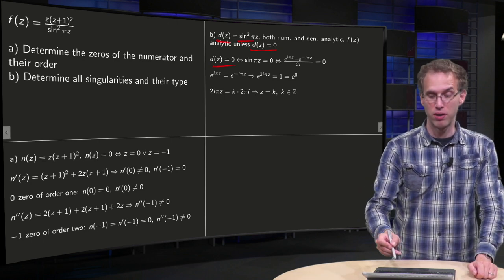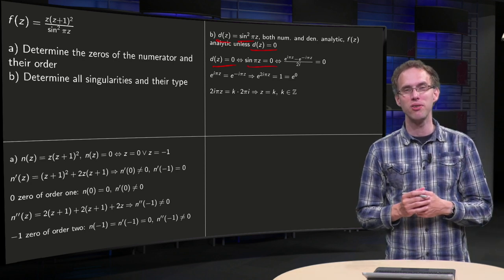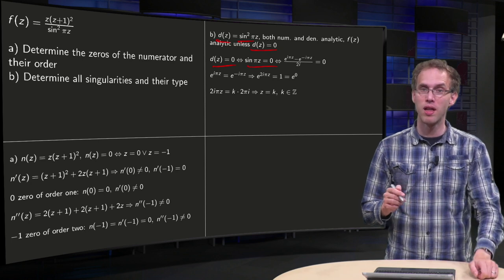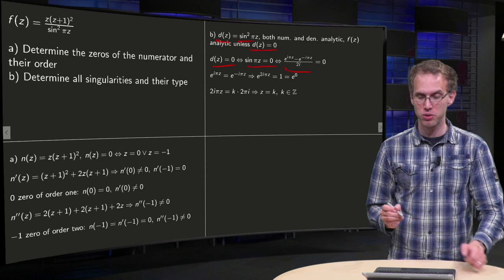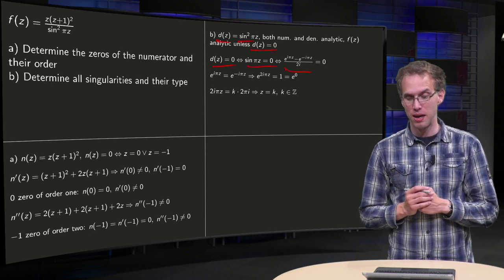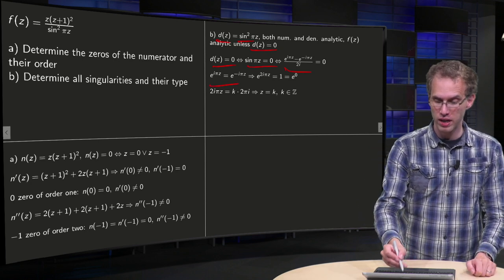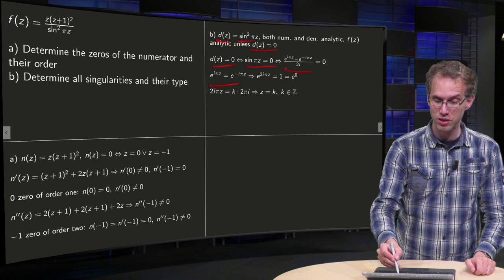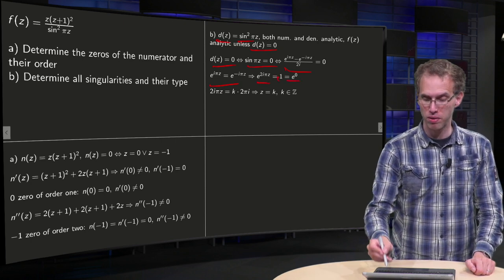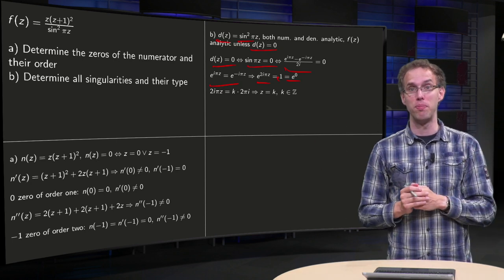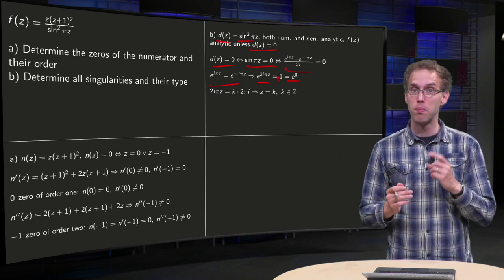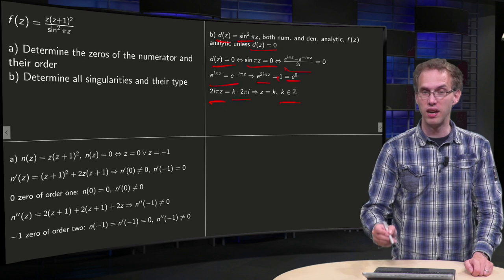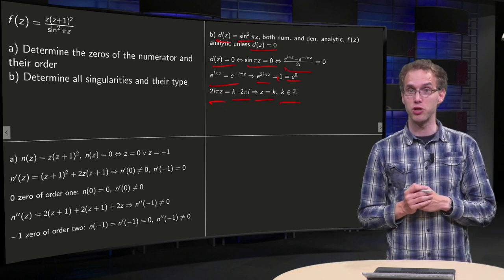d of z is zero if and only if sin of pi z equals zero. The complex case could in principle yield more solutions, so let's be careful. Using the definition, sin of pi z equals zero means e to the power i pi z minus e to the power minus i pi z equals zero, so e to the power i pi z equals e to the power minus i pi z. Multiplying both sides by e to the power i pi z yields e to the power 2 pi i z equals 1 equals e to the power 0. Since e to the power alpha equals e to the power beta if and only if alpha equals beta plus k times 2 pi i, we get 2 pi i times z equals k times 2 pi i, giving solutions z equals k where k is in the integers.